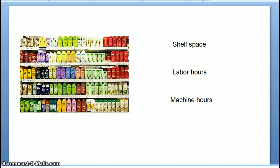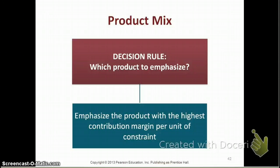What we're going to see is how do we maximize profits given those constraints? Let's say that a company manufactures three products. How do they know which product to emphasize? They have a limited number of machine hours. The decision rule is that the company should always emphasize the product with the highest contribution margin per unit of constraint.